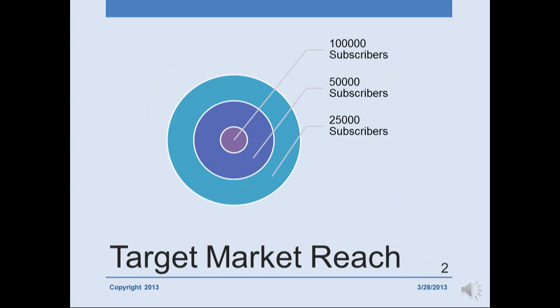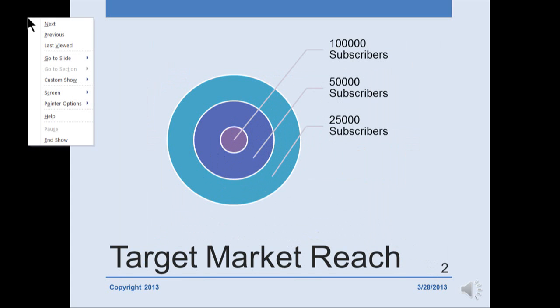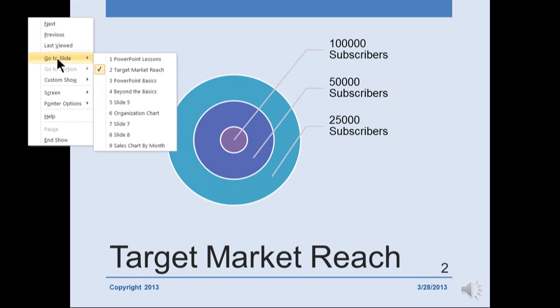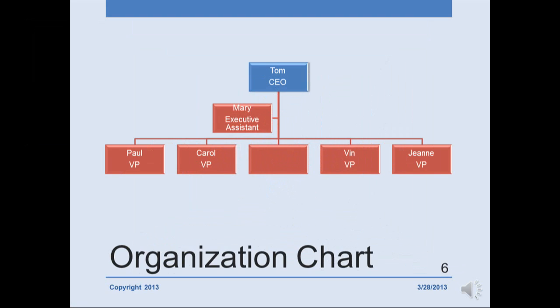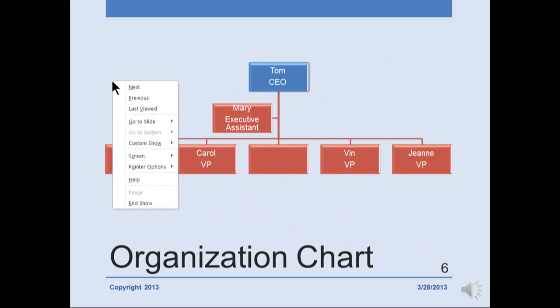Another way you can do it is to right-click on the slide, then pick 'Go to Slide,' and here you can pick slide six. You can do it that way, but the issue is that people in the audience are seeing you right-click and navigate through the menu.